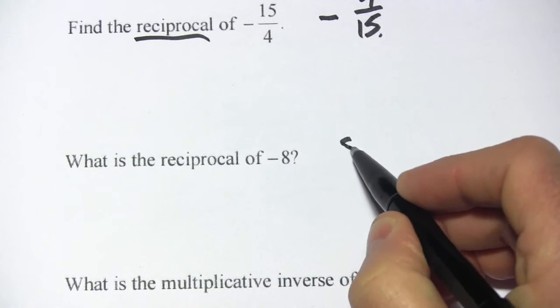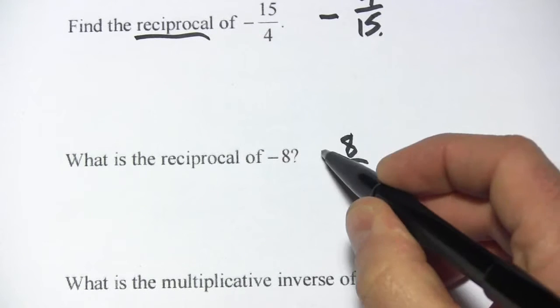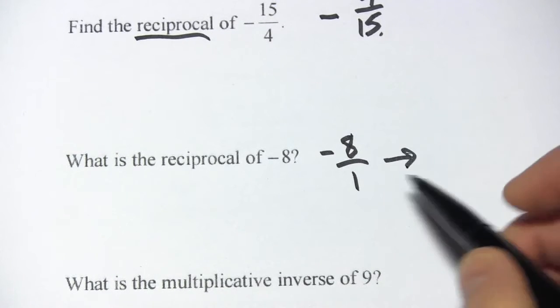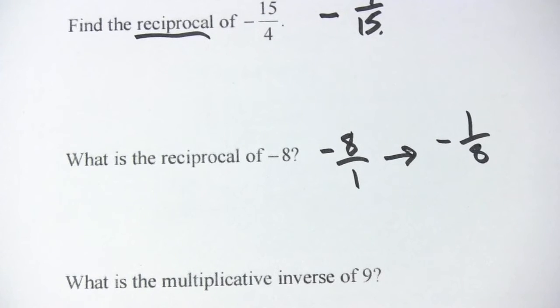Well, first, you should write this as a fraction. Any whole number can be written as itself over 1. So this is negative 8 over 1. When we find the reciprocal, we just flip the top and the bottom. So we're going to have negative 1 over 8.